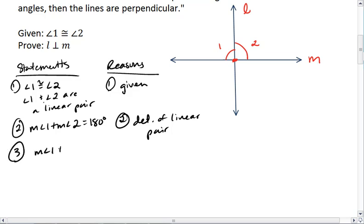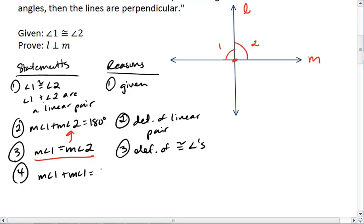We also know that measure of angle 1 equals the measure of angle 2, since the angles are congruent, and that is the definition of congruent angles. We can then substitute in the measure of angle 1 for the measure of angle 2 up here, giving us the measure of angle 1 plus the measure of angle 1 equals 180 degrees. And that is by substitution.